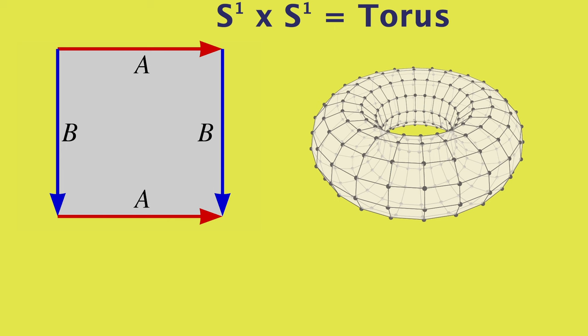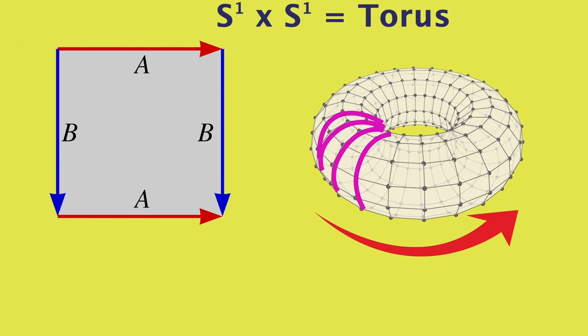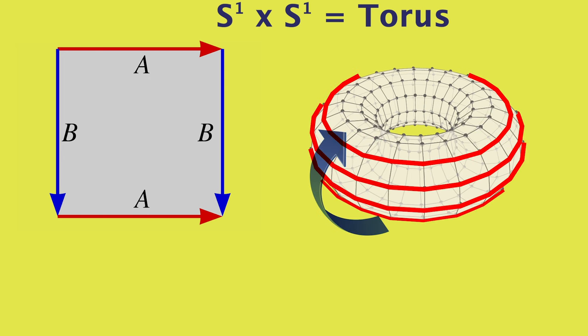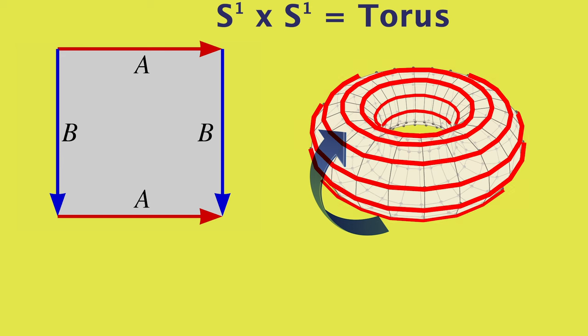A torus is a circle of circles — or a different circle of circles. So that's the basic idea behind the product of shapes. It's amazingly similar to multiplying integers together.